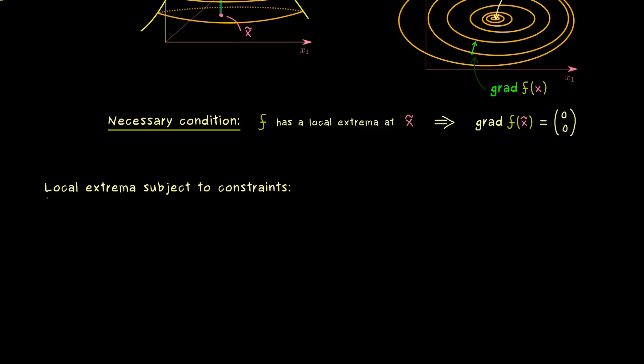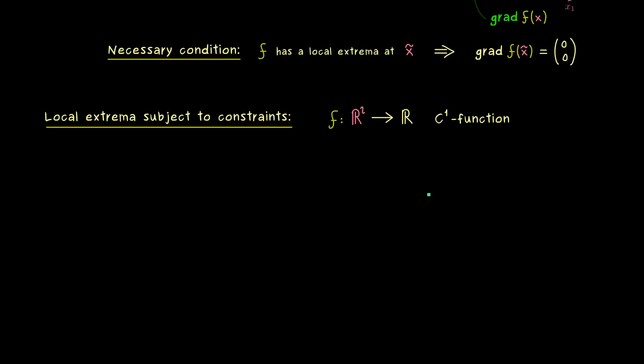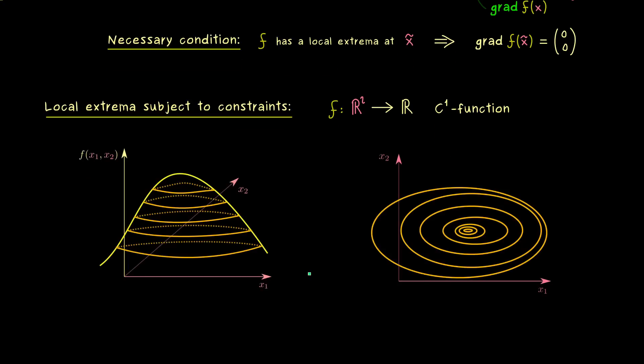So let's talk about local extrema subject to given constraints. To keep it simple, we still just consider C¹ functions defined on R². So we still have the advantage that we can visualize everything easily. I would say, let's first look at the contour lines on the right again.